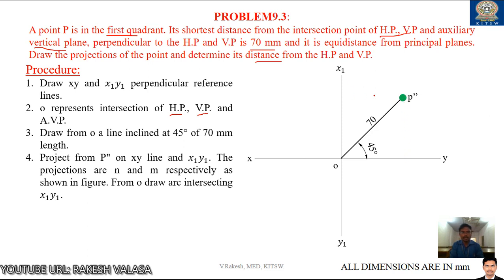He is also asking determine its distance from HP and VP. In that case we need to measure distance from this horizontal plane and vertical plane. Let us see the procedure how to measure the distance from HP and VP. For that case project from P double dash on XY line. This projection is, let us assume this projection is N. Similarly take your compass, O as center take ON as radius, draw the arc to X1Y1 line.